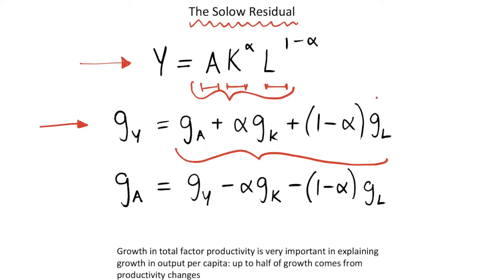We will sometimes define labor growth as being N, and this g_A will sometimes be called G, but I'll just keep them as they are in this video for simplicity.